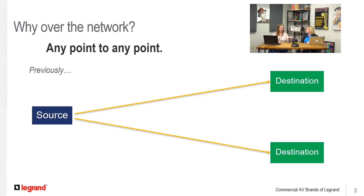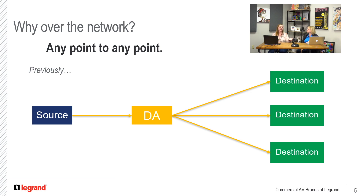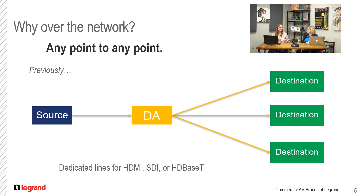So why are we transporting video over a network? Previously, any other kind of connection — we've got a source, whether that's a camera source or a switcher or something — needs to get to some destination, so we might run some AV cabling of some kind. And if our source doesn't have multiple outputs to go to multiple destinations, we might bring that to a DA or distribution amplifier. So you need to run dedicated coax for SDI, HDMI cabling, or active HDMI, BALEN or extender pairs — dedicated AV cabling in order to get your sources to your destinations.